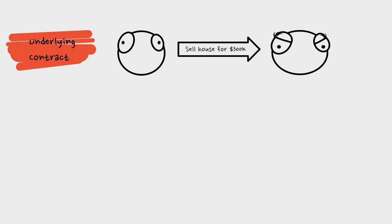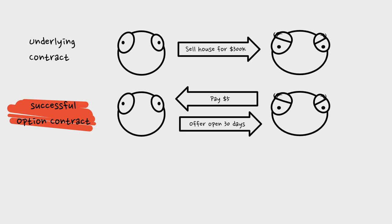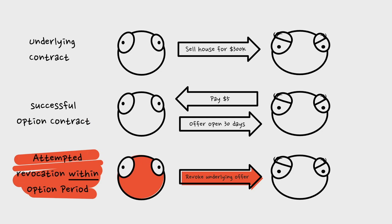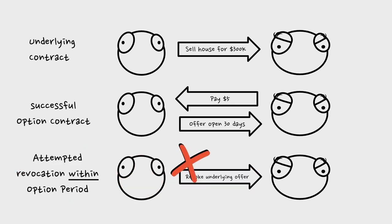Let's look at some straightforward examples. Assume Bob, the offeror, tries to revoke within the option period. We have the underlying offer to sell the house for $300,000 and a successful 30-day option. If within that option period Bob tries to revoke the underlying offer, it's going to fail — a failed revocation — because the option contract forbids him from revoking; he has waived his right to revoke for 30 days. That's the consideration he's giving Barb in exchange for the $5.